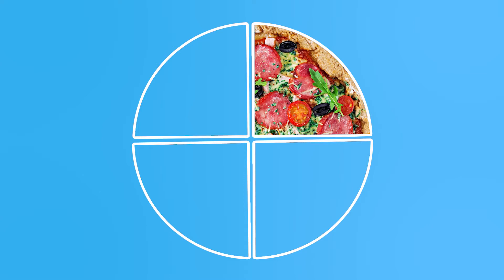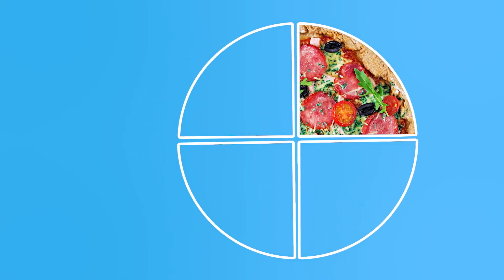How many pieces of the pizza are gone? Let's see — one, two, three! Yes! Three out of four pieces of the pizza are eaten. In math, we have a special way to say that three out of four pieces are eaten, and that's with fractions. To show that three out of four pieces are gone, we write it like this. We read this fraction as three-fourths, or a fancy way to say it is three-quarters.